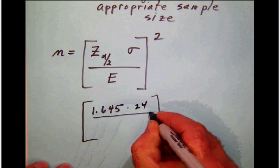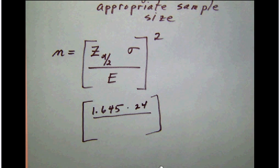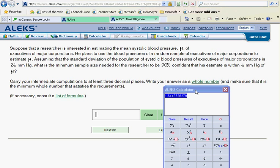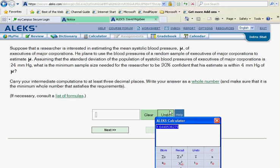We're going to divide that by the error that we are allowed to have. Once again, let's read for that. And the key word here is within. Look at the word within because this is the key to telling us what the error is going to be. When they say within, this is how they tell us the amount of error that we're allowed. So our error is going to be four millimeters. Let's go back and plug that in.